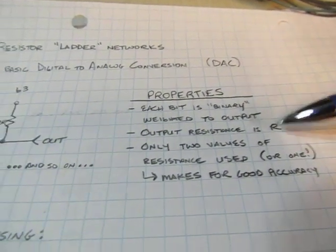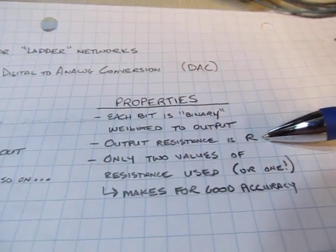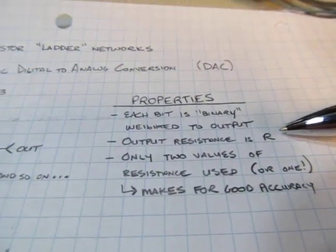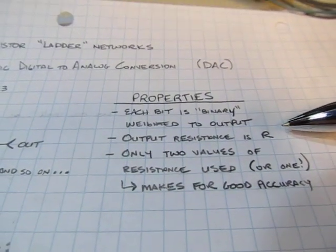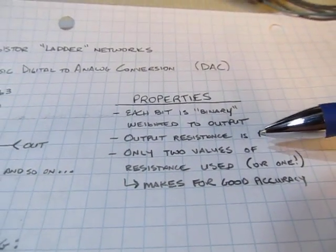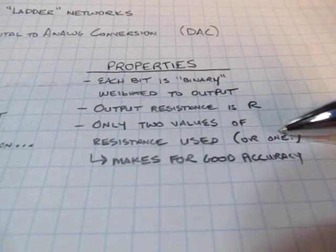The output resistance, regardless of how many bits are used, the output resistance of these networks is always equal to the value R. And we'll show you why. It's actually pretty simple. It's kind of neat.